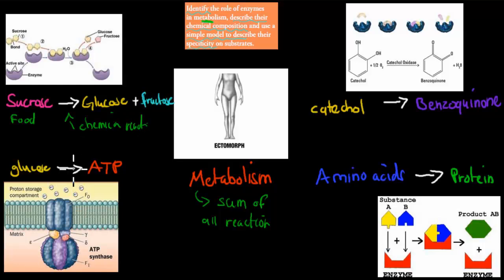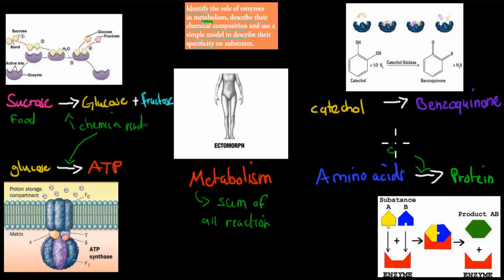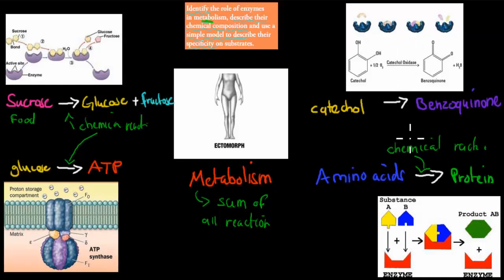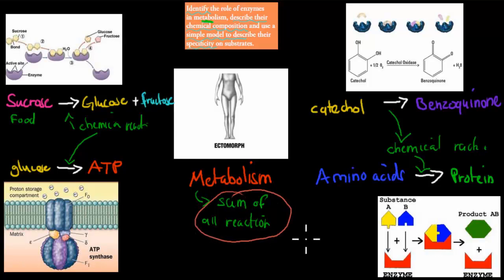Here we have glucose turning into ATP, which is energy — that is also a chemical reaction. We've got amino acids building proteins — that is a chemical reaction. And catechol goes into benzoquinone — also a chemical reaction. There are thousands and millions of chemical reactions in a body, and all of them together is what we call our metabolism.